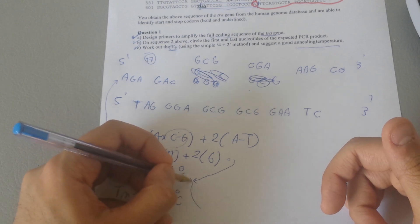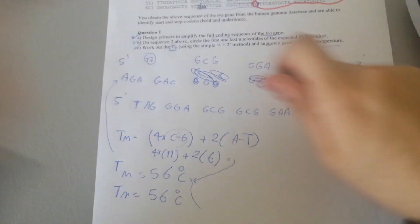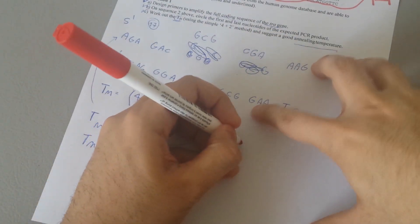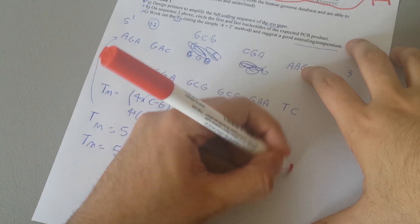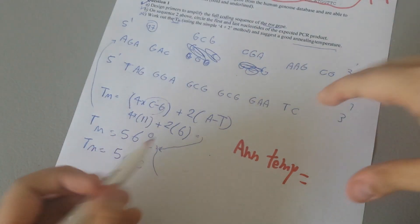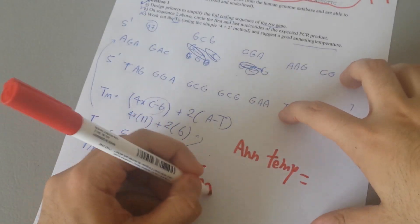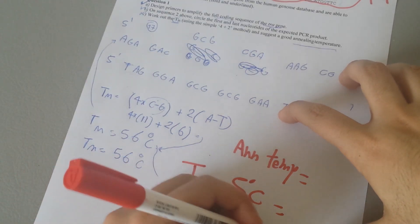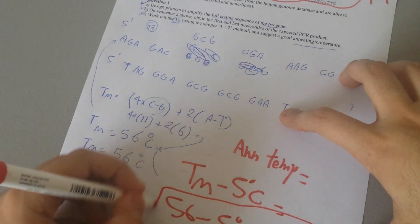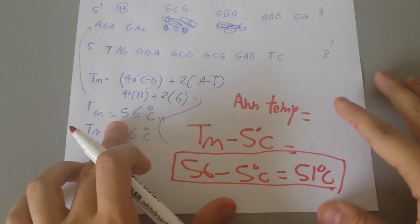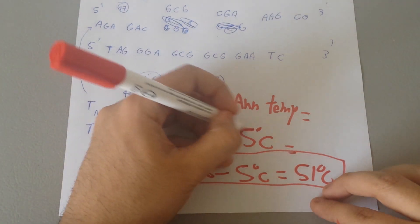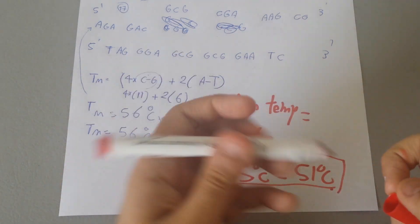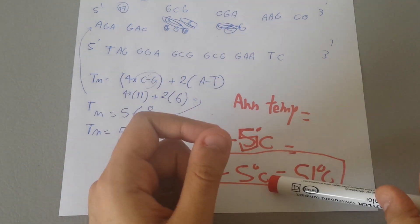Now the best rule is that you subtract the Tm. So annealing temperature is best denoted as Tm subtracted by 5 degrees Celsius. In this case, 56 minus 5 Celsius is 51 Celsius. So for this specific primer, 51 Celsius is a proper and very good efficient annealing temperature, and we have to use this temperature to get a very good efficient amplification done by this PCR.